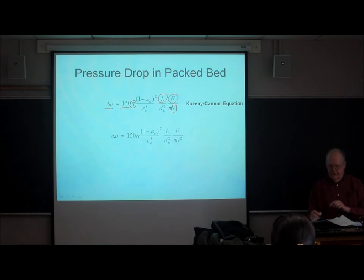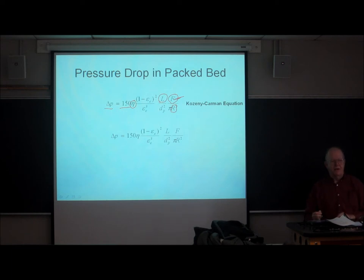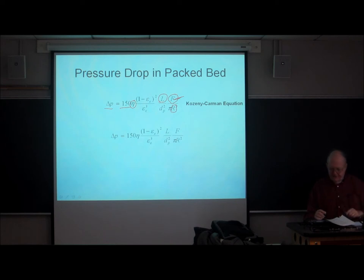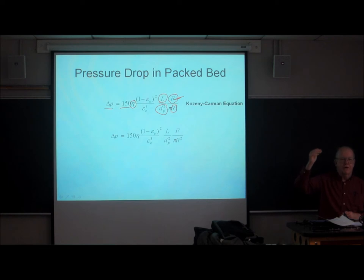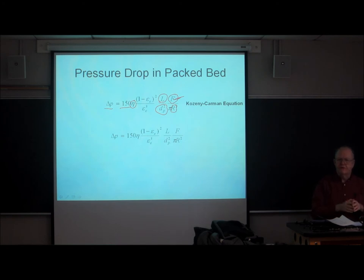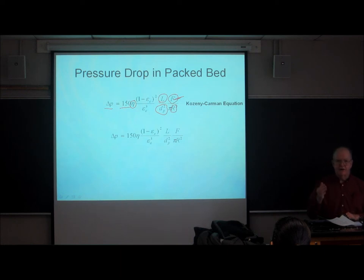If we put linear velocity instead of flow rate, the radius dependence cancels — what really matters is the linear velocity, not the flow rate. And here's the key: pressure depends inversely on the square of the particle diameter. Over the history of LC, particles have gotten smaller and smaller, and every time the particle diameter drops by a factor of two, the pressure drop needed goes up by a factor of four. This accounts for the increase from 400 bar to 1,200 bar over the past few years.